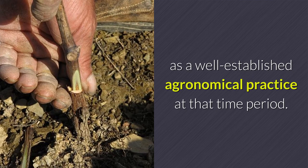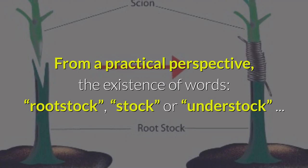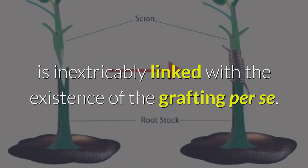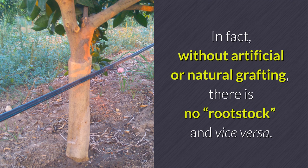From a practical perspective, the existence of words such as rootstock, stock, or understock is inextricably linked with the existence of grafting per se. In fact, without artificial or natural grafting, there is no rootstock, and vice versa.